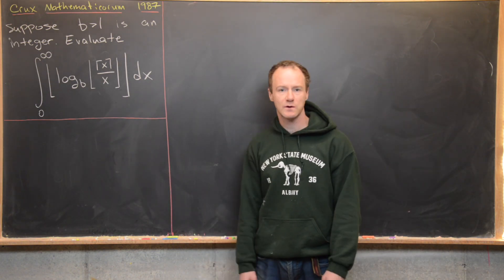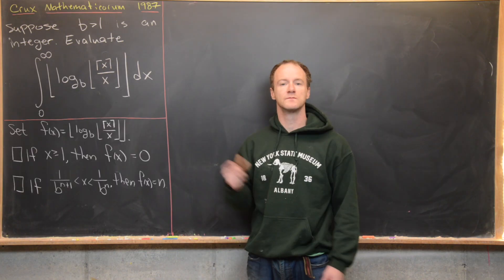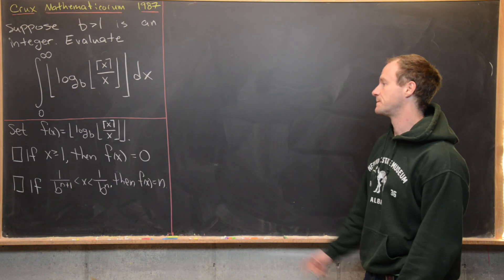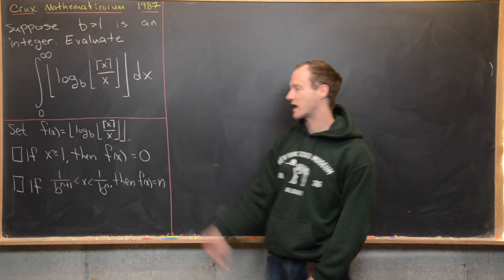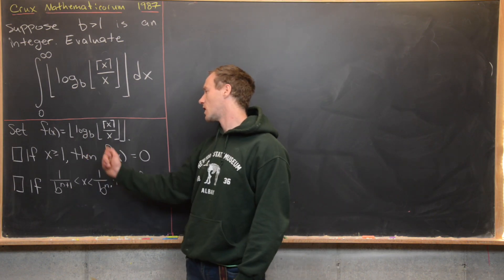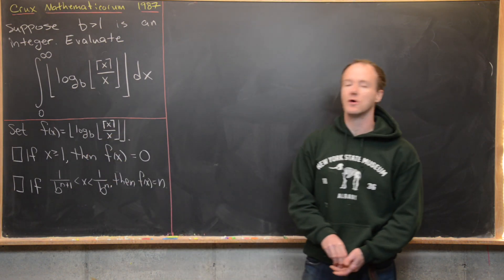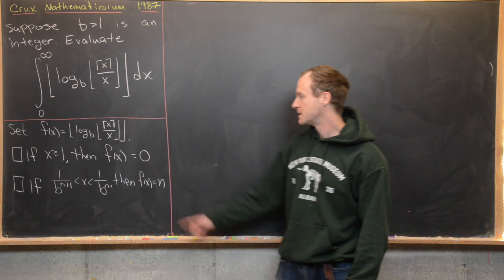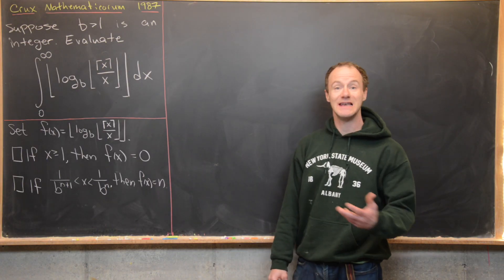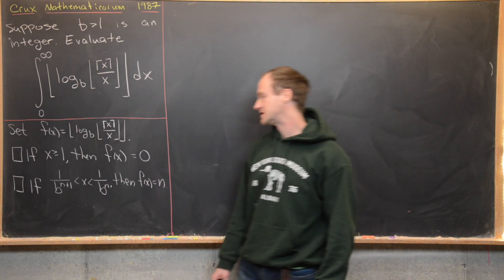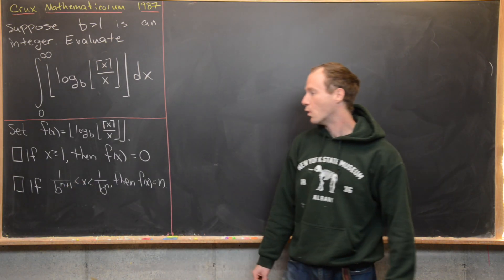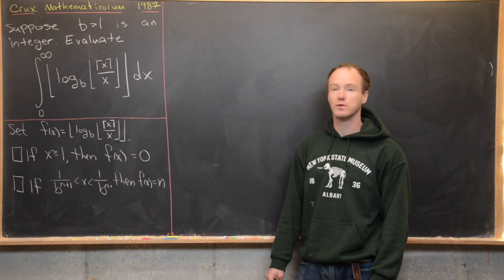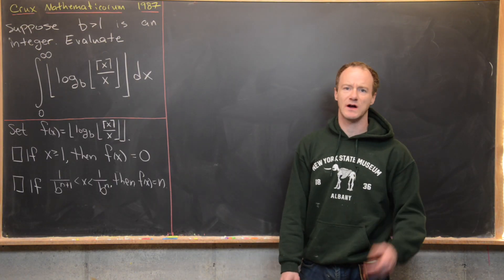I'm going to prove some preparatory results first. We'll set f of x equal to the integrand — that is, the floor of the log base b of the floor of the ceiling of x over x. We want to show: first, if x is greater than or equal to one, then f of x equals zero; and second, if n is a positive integer and x is between one over b to the n plus one and one over b to the n, then f of x equals n. These two facts will give us a quick solution.